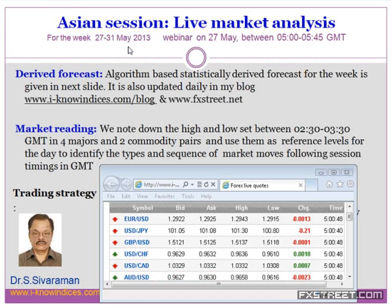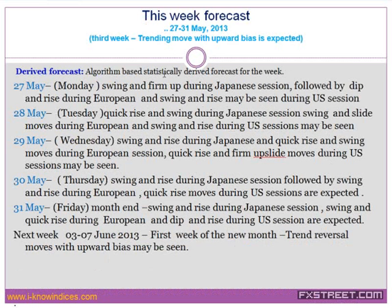The market is known to make volatile moves during the last week and the first week of every month. So we could come across some good volatile moves, giving great either-way trading opportunities. Let me explain the expected market moves for this particular week. This is an algorithm-based derived forecast for the period 27th to 31st of May.